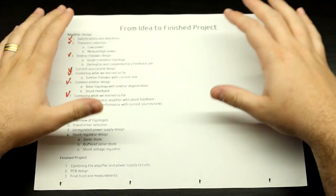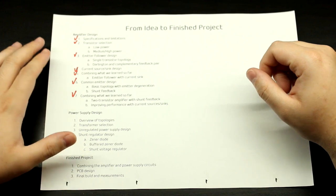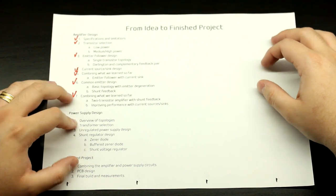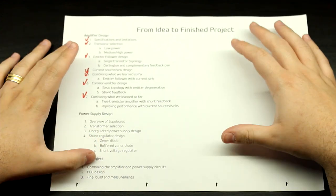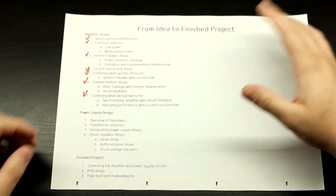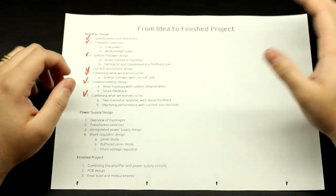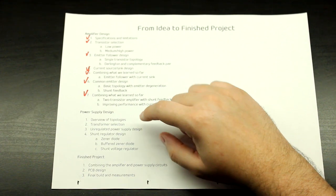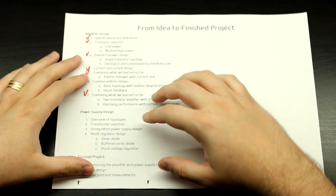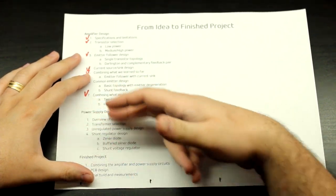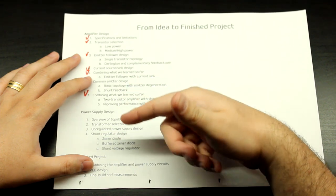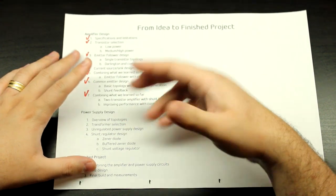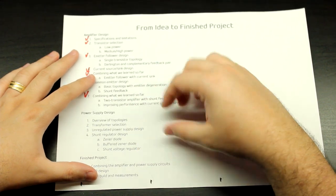Hello everyone! In today's video we're going to continue the headphone amplifier project, but this time we're going to be looking at the power supply of the circuit. First I'm going to do an overview of the topologies we can use to power this circuit. Then instead of going to the power transformer selection and unregulated supply design, I'm going to leave that for later. Usually you first design your regulator and then design the unregulated supply and select a transformer based on the specifications of the regulator design you've chosen.